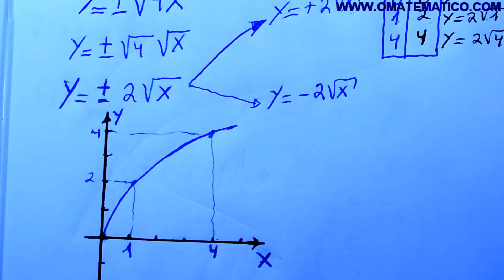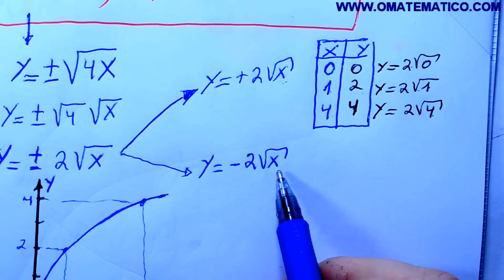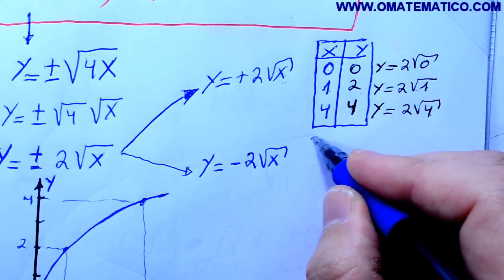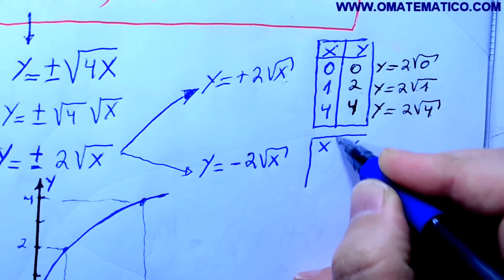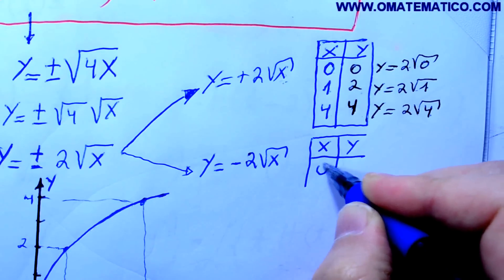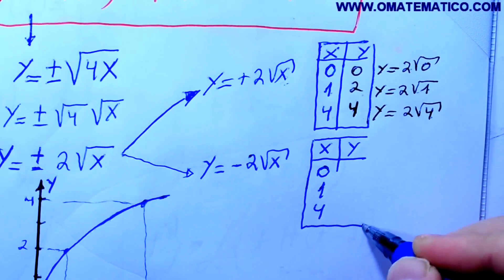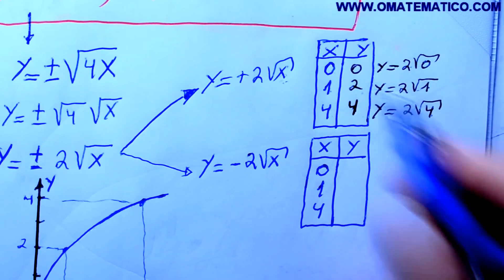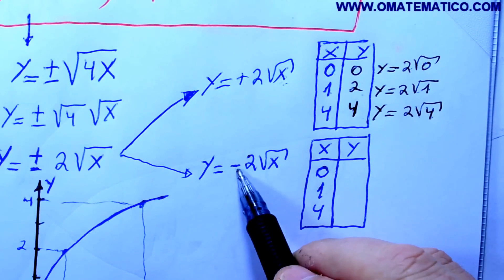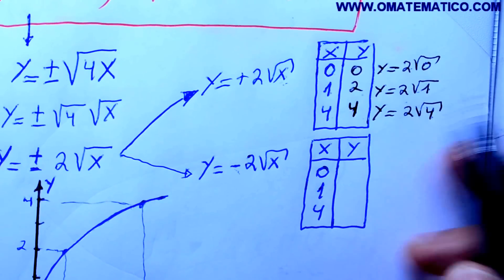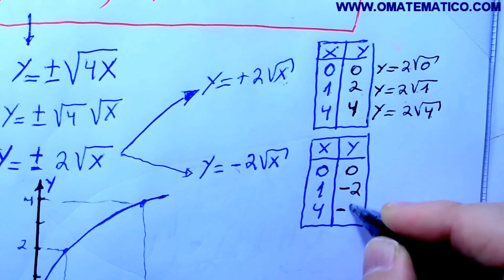Agora, tem também o gráfico de menos 2 raiz de x. Se eu for fazer pelo mesmo sistema, é a parte de baixo. Lembro que gerou duas funções. Vou pegar o 0, o 1 e o 4 também e calcular. Vai dar o mesmo valor, entretanto, em vez de positivo vai ser negativo, porque tem um menos na frente. Então, é o mesmo cálculo: 0 não tem sinal, aqui vai dar menos 2, aqui vai dar menos 4.